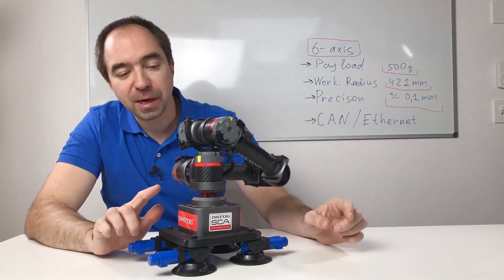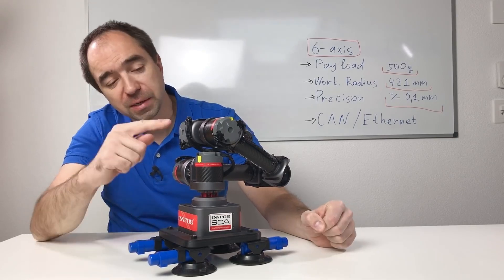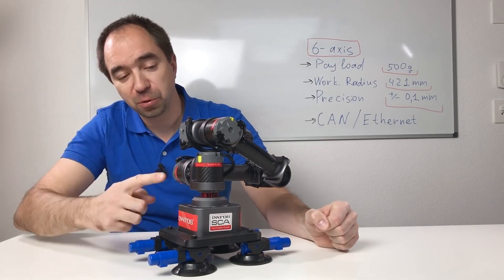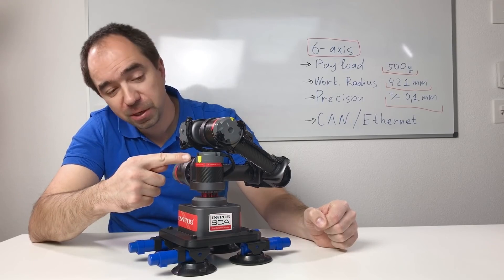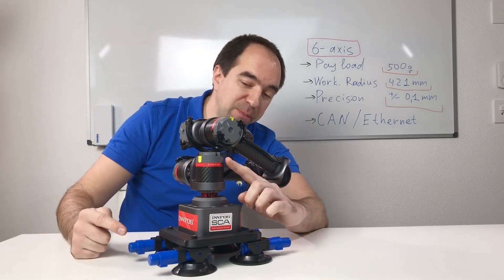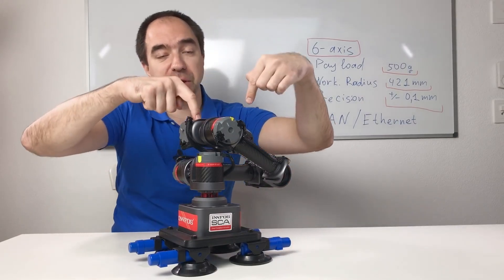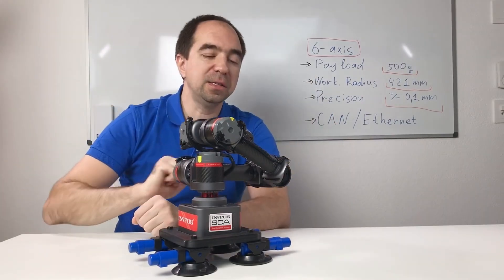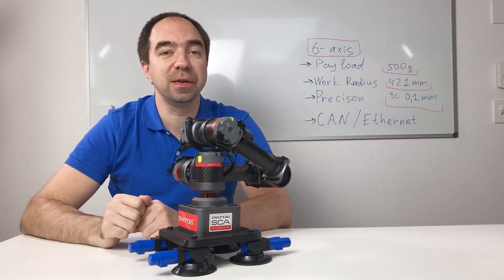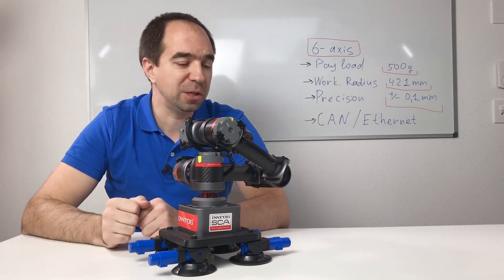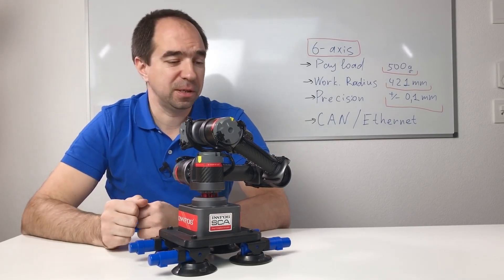As this robot uses CAN communication, that's why the cables go like this. First cable goes to the first actuator, then the cable comes from this first actuator goes to the second one, to the third one, to the fourth one, fifth one and sixth one. And at the end of the sixth actuator there is a termination plug with 120 ohms resistance inside.